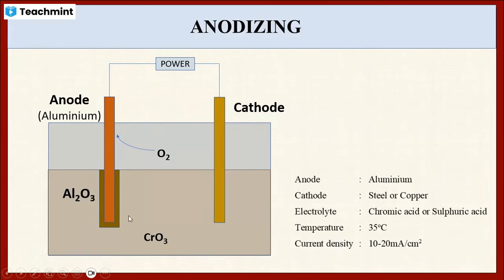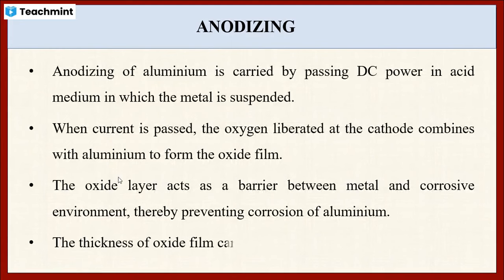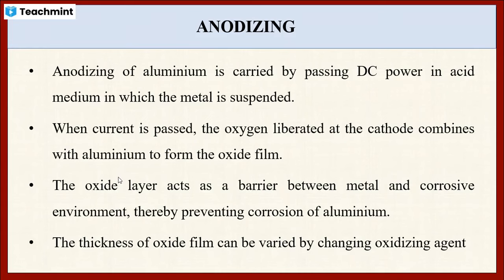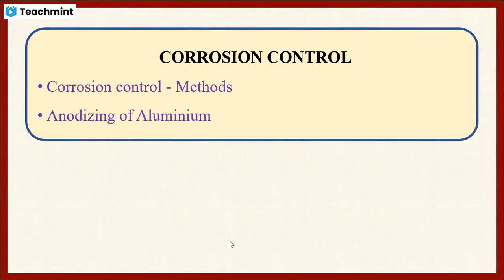The thickness of this protective layer can be varied by changing the oxidizing agents. Here, chromic oxide is used as the oxidizing agent. By changing the oxidizing agent, the thickness of the protective layer can be varied. Overall, we discussed the various methods to control corrosion, as well as the anodizing of aluminum by the electrolysis method.